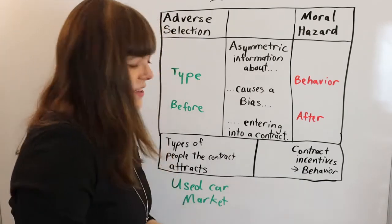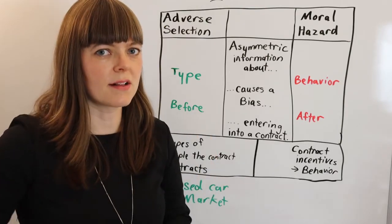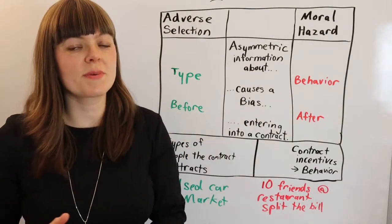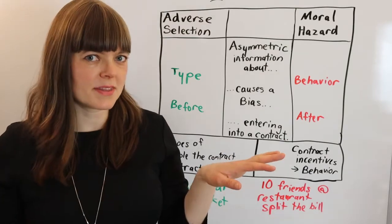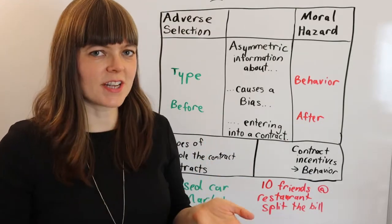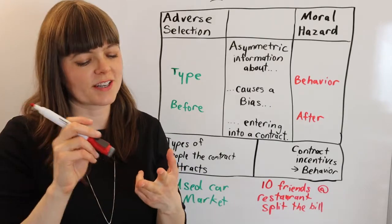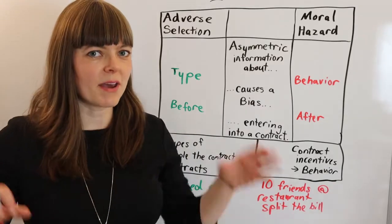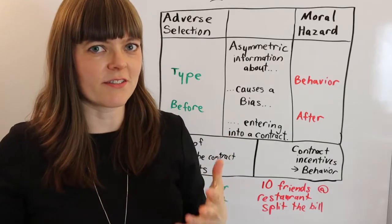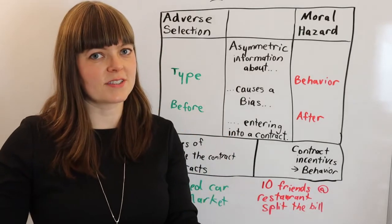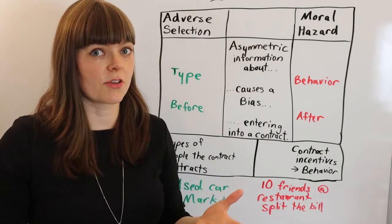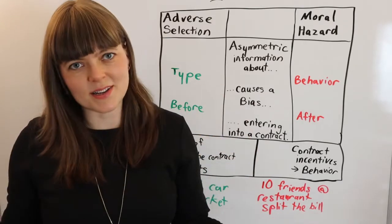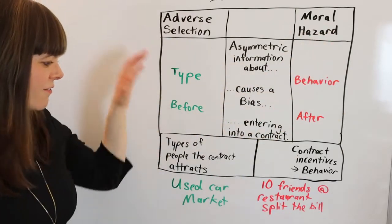A classic example of moral hazard is ten friends going out to eat and splitting the bill. If the contract is an agreement at the beginning of the meal to split equally, that incentivizes certain behaviors — it incentivizes you to order dessert, the expensive dish, a few drinks. That incentive is created by the verbal contract all ten friends agreed to. Because of that behavior incentive, it drives up the price of the meal because people respond to the incentives at play. That's moral hazard.